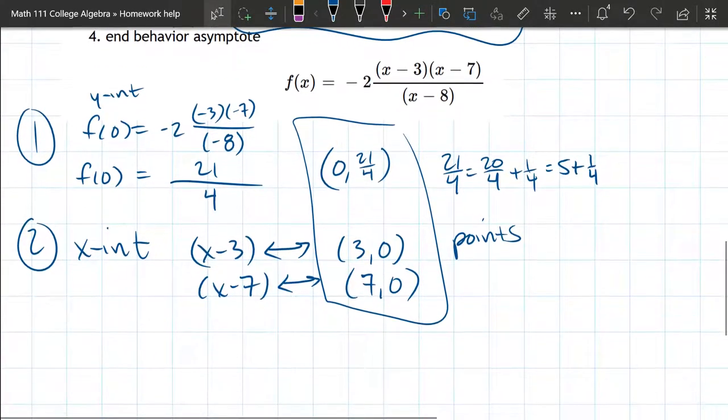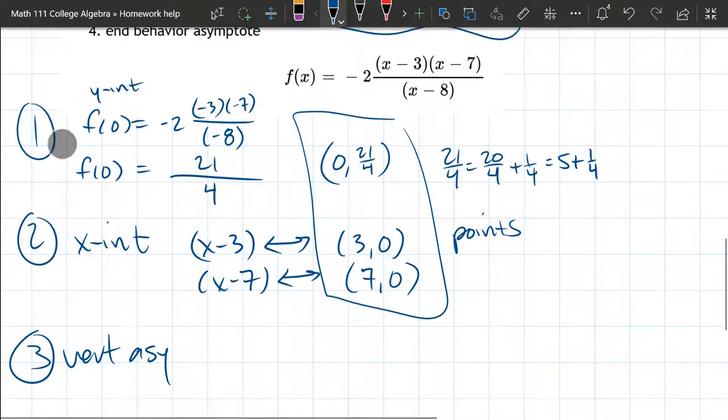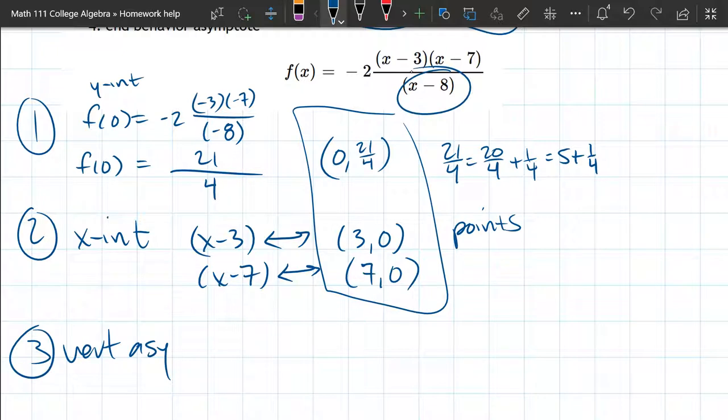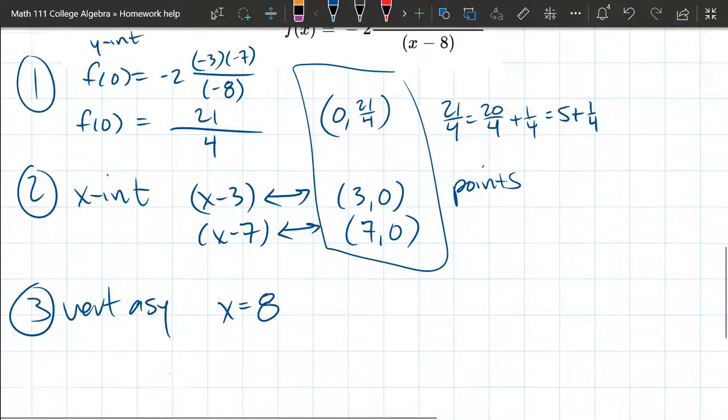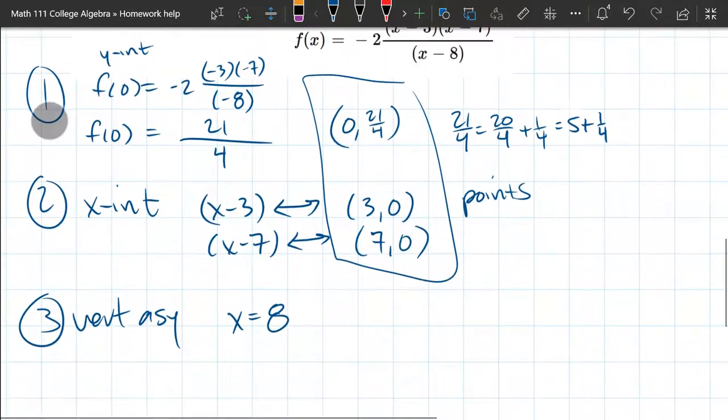All right, vertical asymptote. Those are in the denominator. What makes x minus eight zero? X equals eight. And so what's x equals eight gonna look like? It's actually gonna be a vertical line at the x-coordinate of eight. All right, that's vertical asymptote.